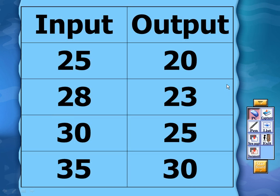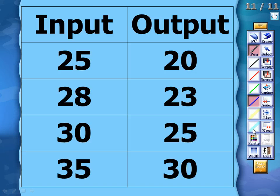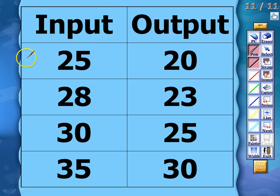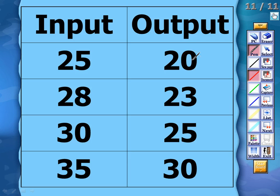I want you to pause the video, copy down this input/output table, and work the problem out with me. We're going from 25 to 20, 28 to 23 — the numbers are decreasing, so we're dealing with subtraction or division. Testing 25 to 20: we can subtract 5 to get 20. There's no whole number we can divide 25 by to get 20, so let's try subtract 5 as our rule.